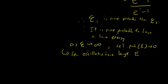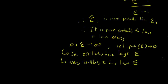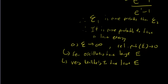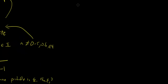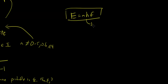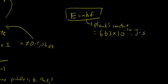This results in very few oscillators having large energy. Assuming that all combinations of energy and oscillations are equally likely, it would be very unlikely to have large energy. This is tied through Max Planck's equation: E equals nhf, where h is Planck's constant — 6.63 times ten to the power of negative 34 joule-seconds — f is the frequency, and n is an integer.